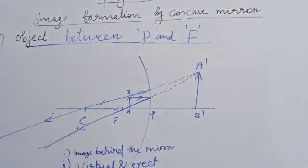Image formed is enlarged. This is a highly enlarged image. These are the characteristics of image formed when the object is placed between P and F.